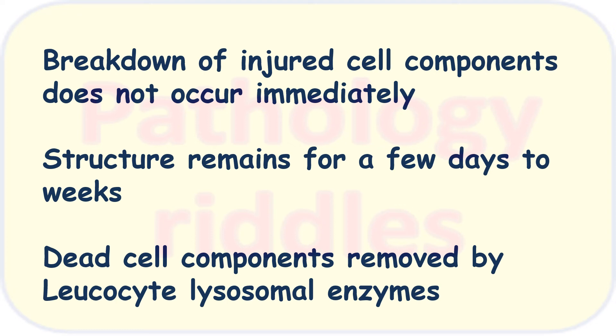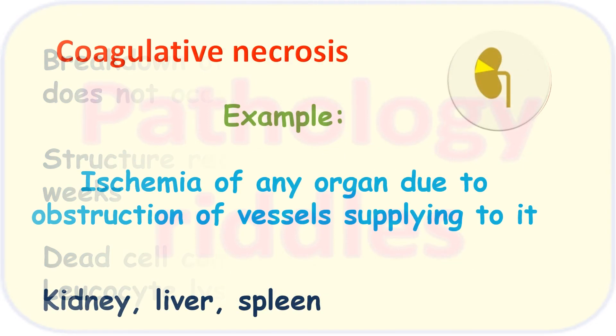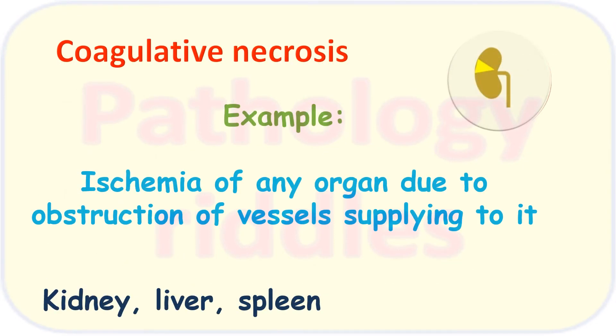The dead cell components are removed by leukocyte lysosomal enzymes — inflammatory cells come and clean up the dead cell components. The example is ischemia of any organ due to obstruction of vessels supplying it — kidney, liver, spleen — whenever there is disruption of blood supply to these organs, there will be coagulative necrosis.